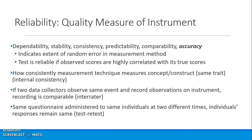You want to know that the observed scores — the scores you get from your participants — are highly correlated with their true scores. You might look at measuring the concept of the construct and examining how the items are internally consistent, kind of like inter-item correlation.